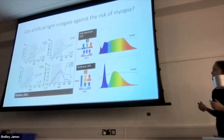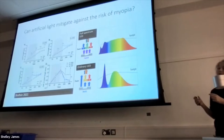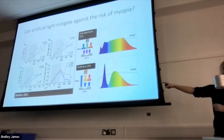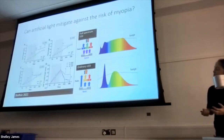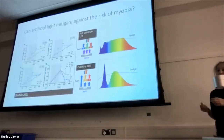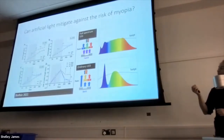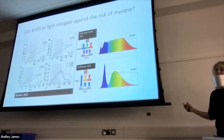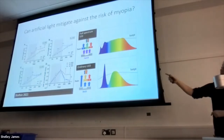Another approach is to use LEDs with chips that emit light with a colour spectrum more like sunlight. There's a paper in the Biorix repository, currently under review, where chicks with induced myopia — which normally reverses if you take the goggles off — fully recovered and were no longer myopic when exposed to the sunlight-spectrum LED lights, whereas chicks exposed to fluorescent lights were still myopic.